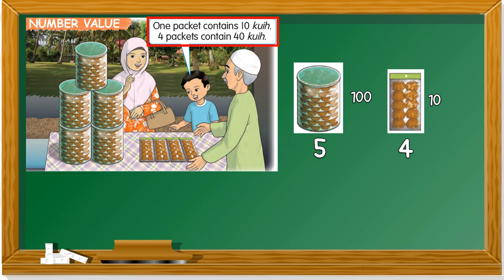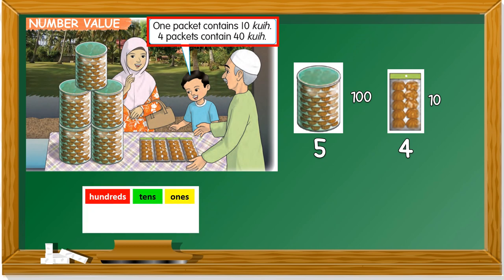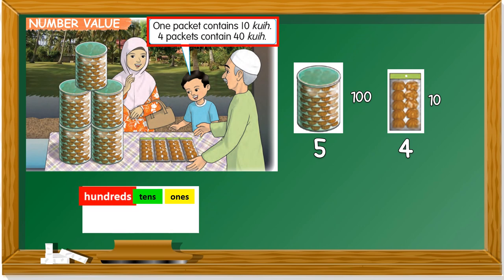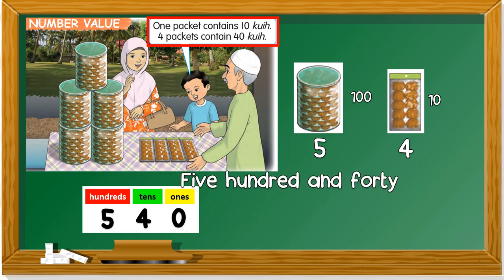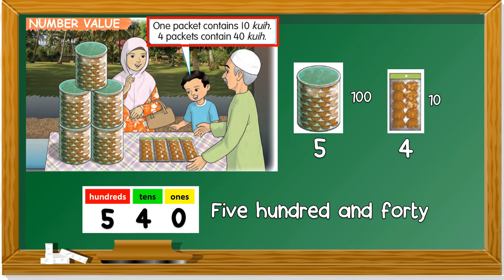Do you still remember this table with ones, tens, and hundreds? How many hundreds do we have? We have five, so we write 5 in the hundreds column. How about the tens? Four. Any ones? No ones. So it's five hundred and forty — 540 kuihs.